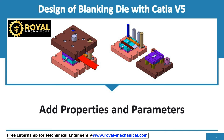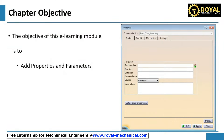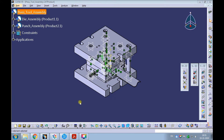Welcome. In this e-learning module, I shall demonstrate and make you understand how to add properties and parameters to all the parts and assemblies of the press tool in Catia V5. Let me demonstrate.